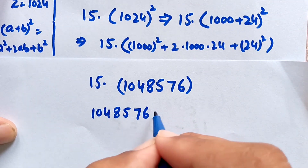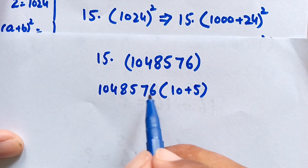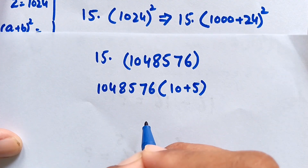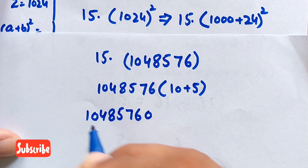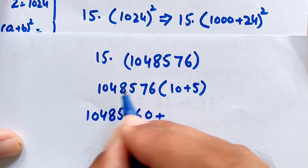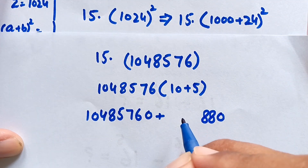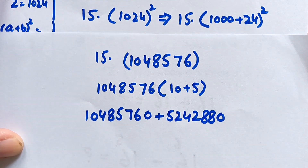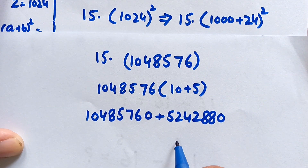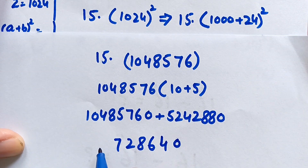We write 15 as 10 plus 5. Multiplying 10 by 1,048,576 gives 10,485,760. Multiplying 5 by 1,048,576 gives 5,242,880. Adding these two results together gives the final answer.